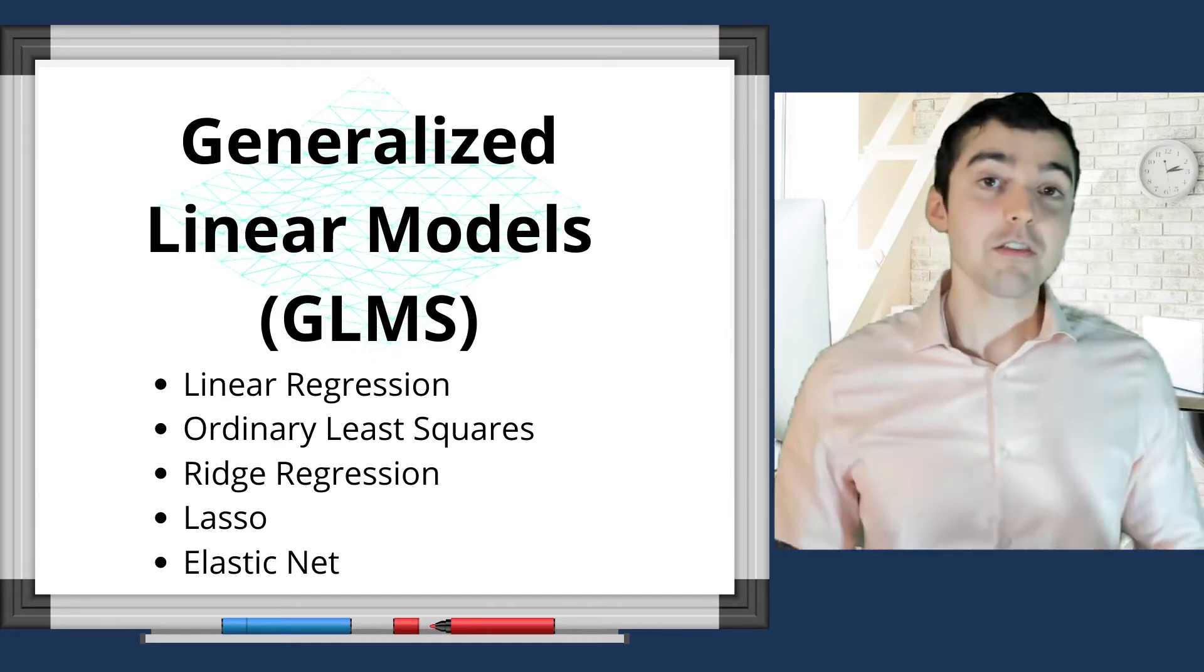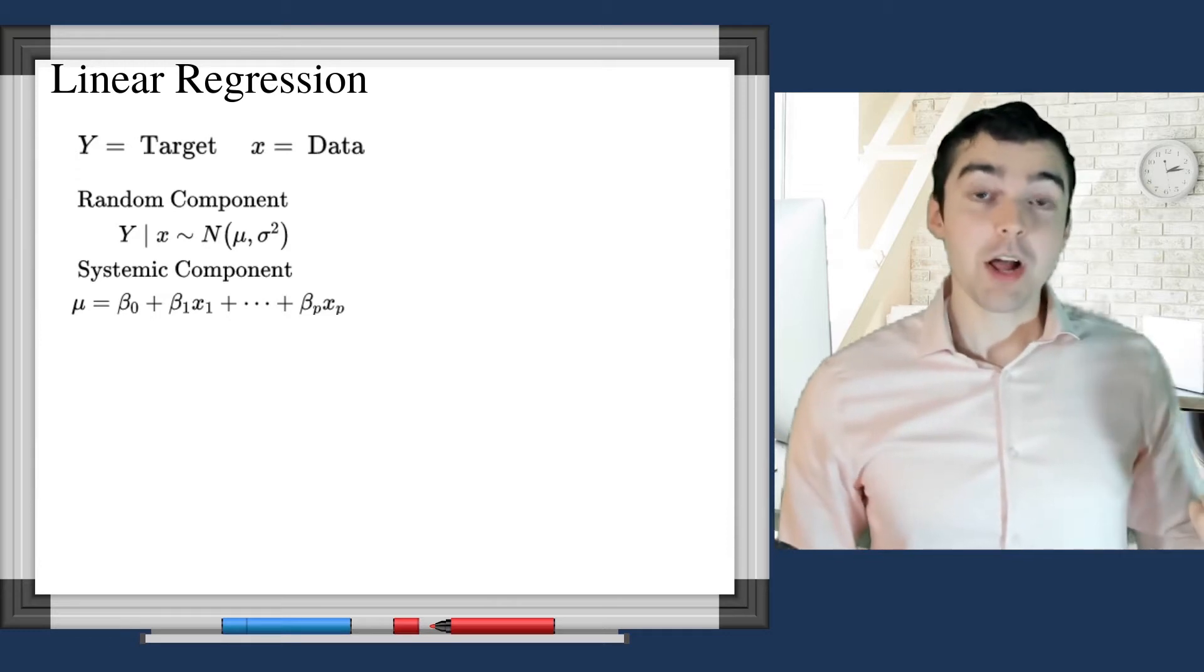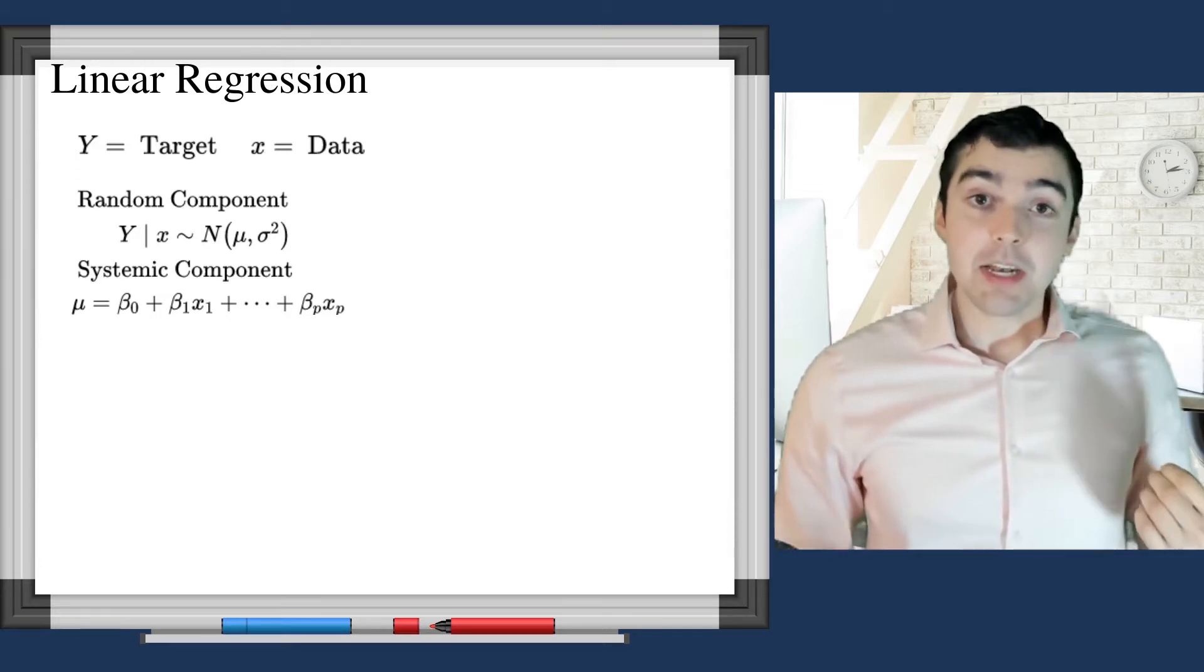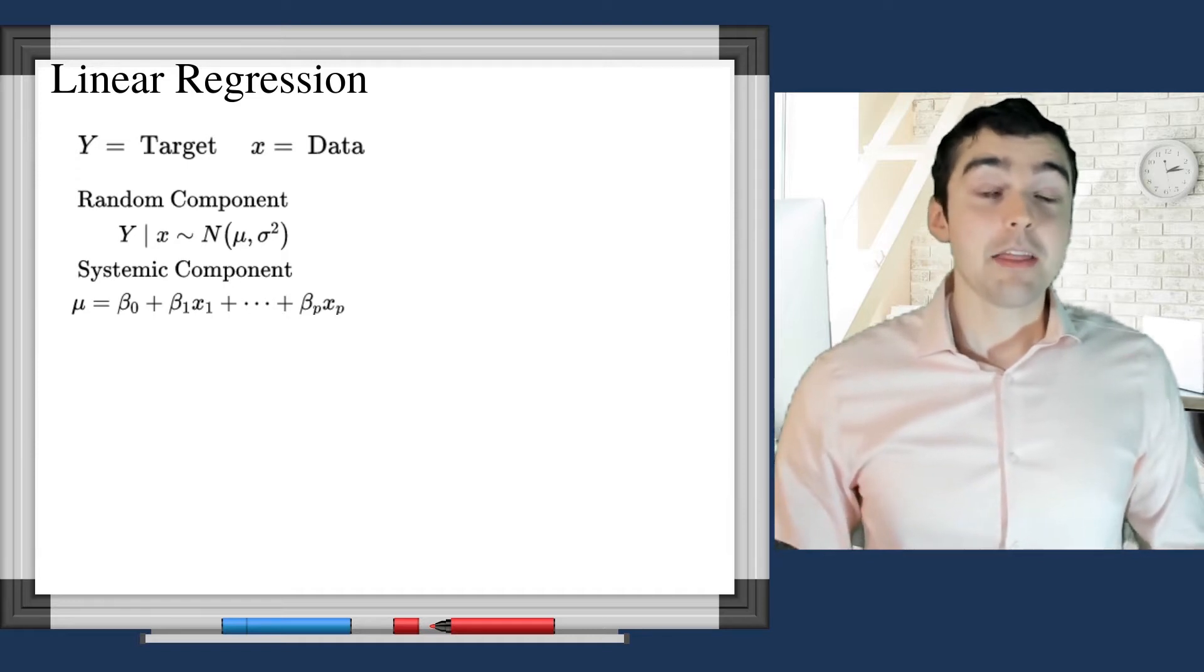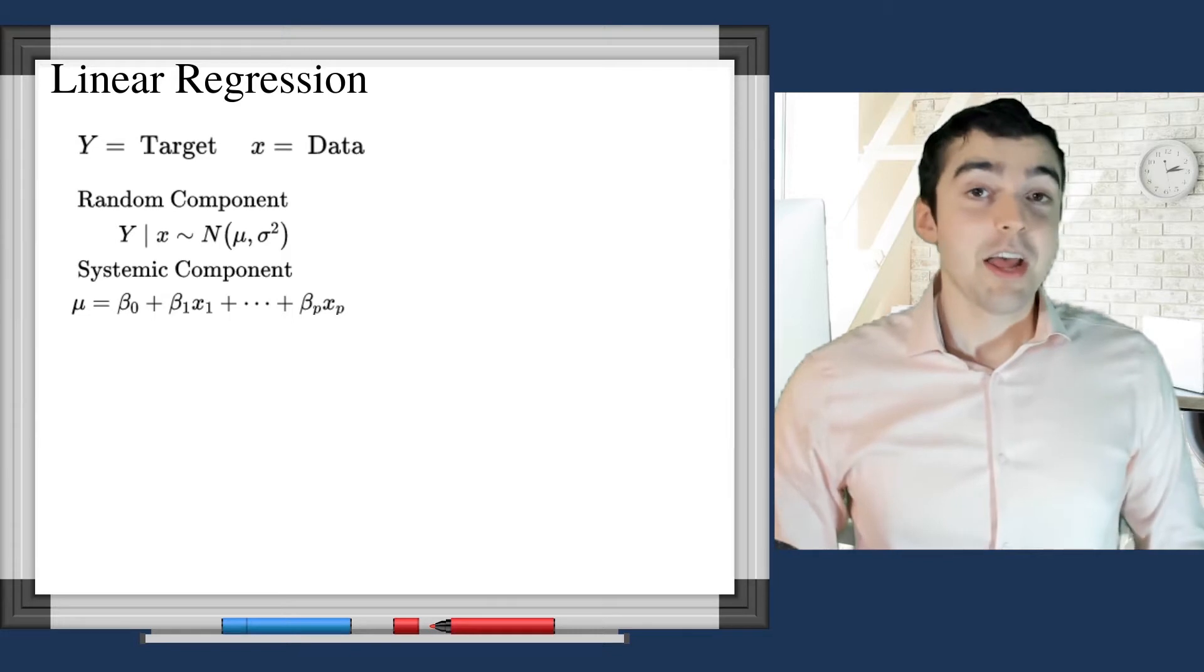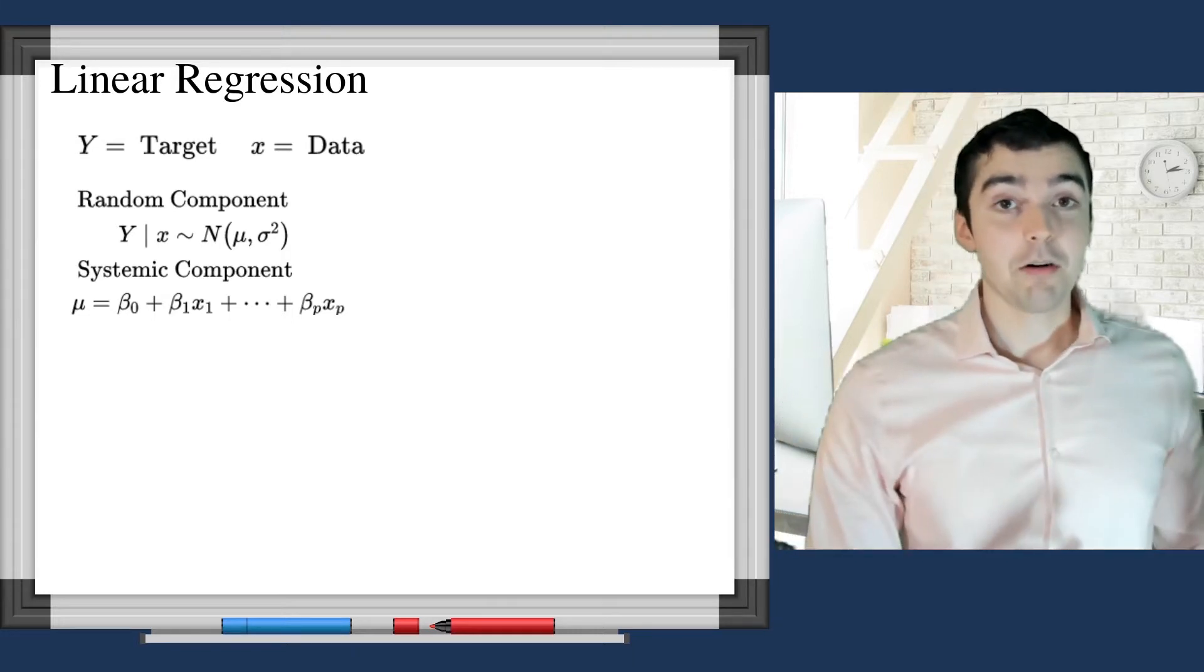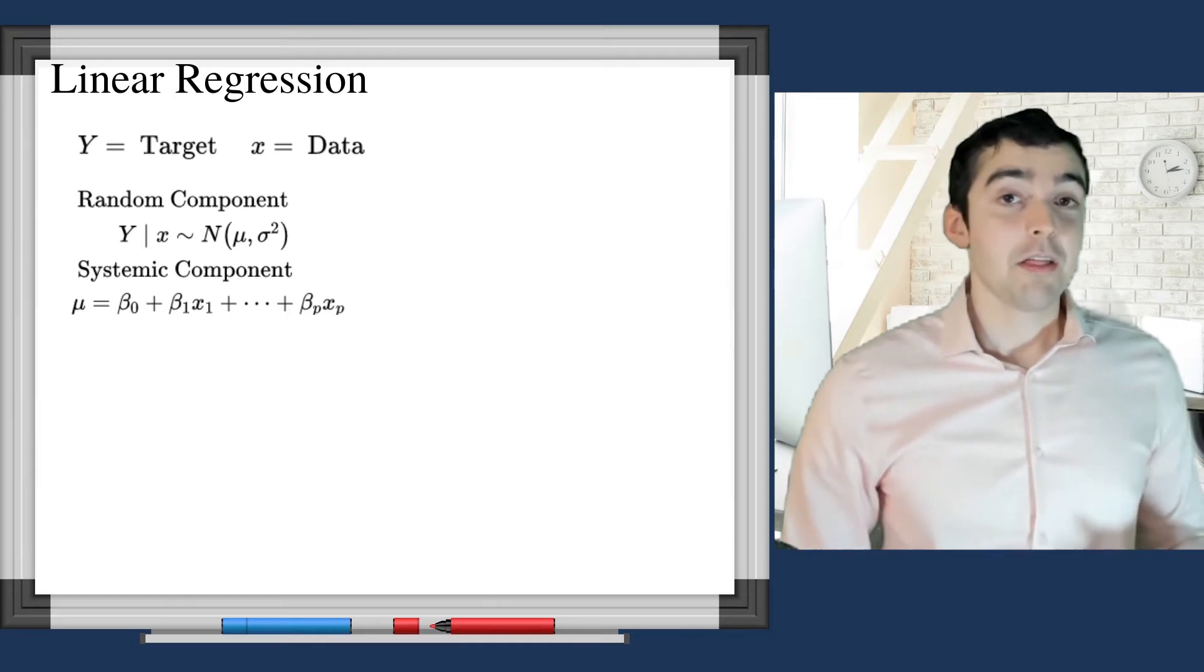This assumes two key items. Item number one, that the mean is related to the target by the identity function. This just means that if you take all the variables and multiply them by the coefficients, you'll get the mean